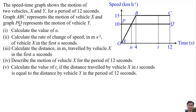The speed-time graph shows the motions of two vehicles X and Y for a period of 12 seconds. Graph ABC represents the motion of vehicle X and graph PQ represents the motion of vehicle Y.